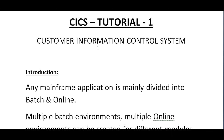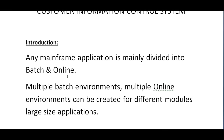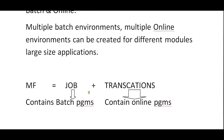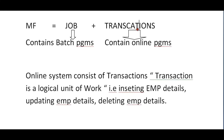Most banking systems, insurance systems, and railway reservation systems use these online screens for their processing. For example, railway reservation systems use this online system to issue tickets to customers. Any mainframe application is mainly divided into batch and online — multiple batch and online environments can be created for large-size applications like banking, insurance, railways, and airways. Mainframe is a combination of jobs and transactions.